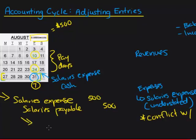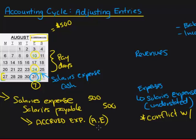This is known as an accrued expense adjusting entry. The term 'accrued' is synonymous with owing, because as you can see, the amount payable to the employees has not actually been paid yet.